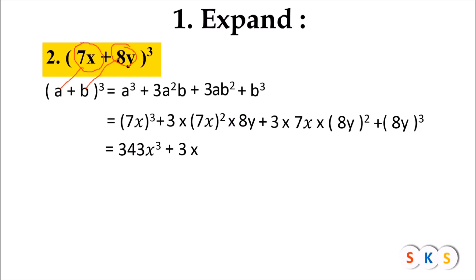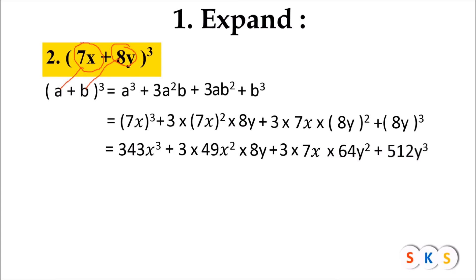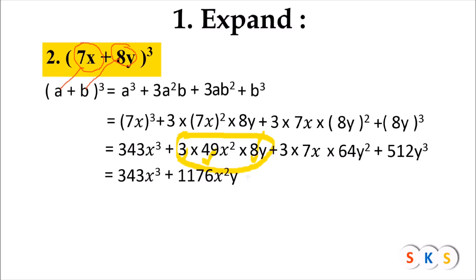We will take the square of 7x — 7x into 7x — that is 49x squared, into 8y. Plus 3 into 7x into the square of 8y, which is 64y squared. Plus the cube of 8y — 8y into 8y into 8y — that gives us 512y raised to 3. Now we will multiply 3 with 49 and then with 8, giving us 1176x squared y.